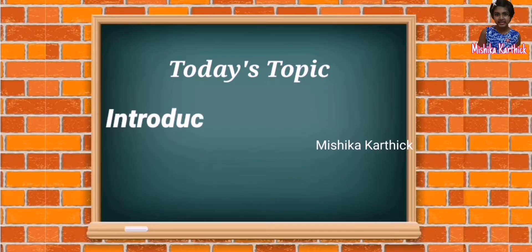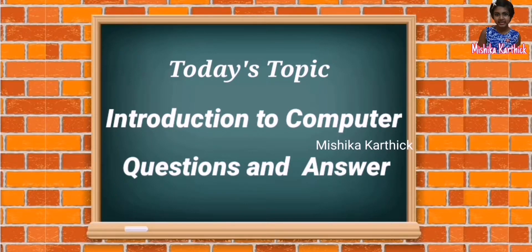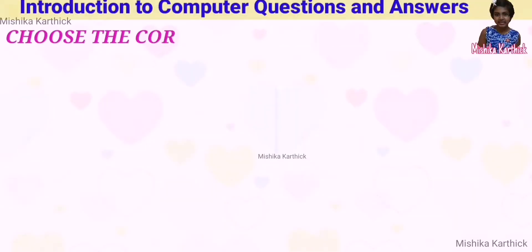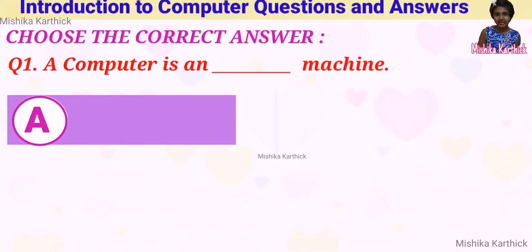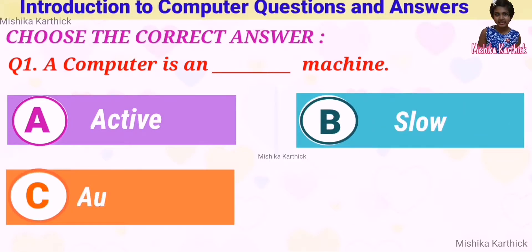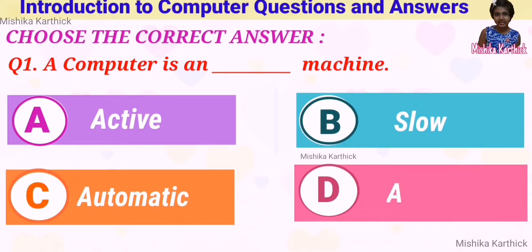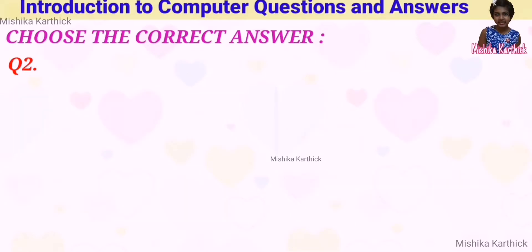Today's topic is introduction to computer — question and answers. Choose the correct answer. Question 1: a computer is a dash machine. Options: A. Active, B. Slow, C. Automatic, D. ATM. Answer: C. Automatic. Question 2: a computer runs on dash. Options: A. Fuel, B. Electricity, C. Manpower, D. Heat. Answer: B. Electricity.